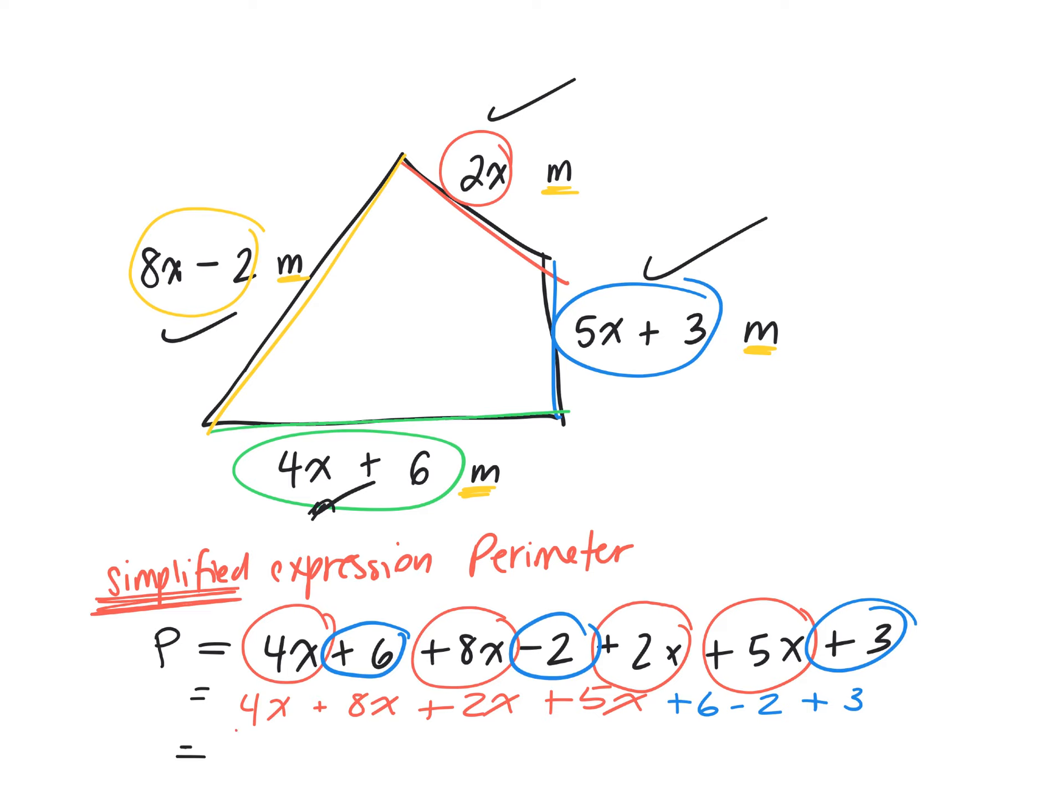How many x's do I have? 4 plus 8, I'll do it in my head. Plus 2. Plus 5. 19x. And then I have 6 take away 2. What's 6 take away 2? 4 plus 3. 7.